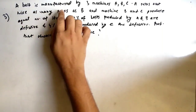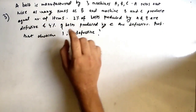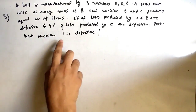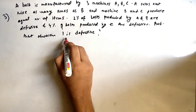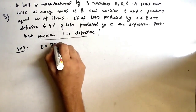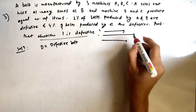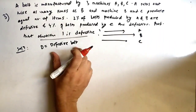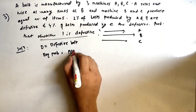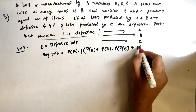Our third question: A bolt is manufactured by three machines A, B, and C. A turns out twice as many items as B, and machines B and C produce equal numbers. Two percent of bolts produced by A and B are defective, and four percent of bolts produced by C are defective. Find the probability that a chosen bolt is defective. Let D = defective bolt. Using total probability: P(D) = P(A)×P(D|A) + P(B)×P(D|B) + P(C)×P(D|C).